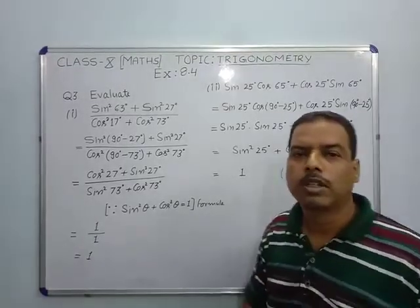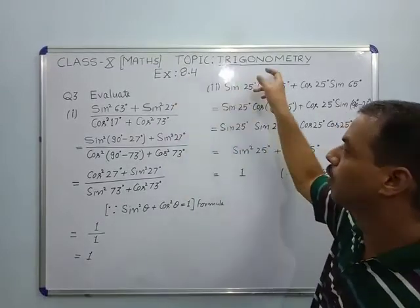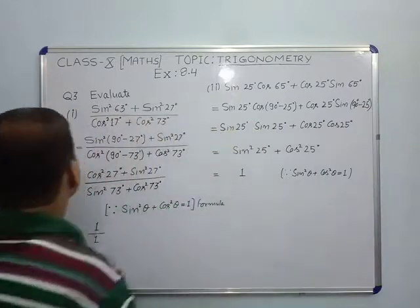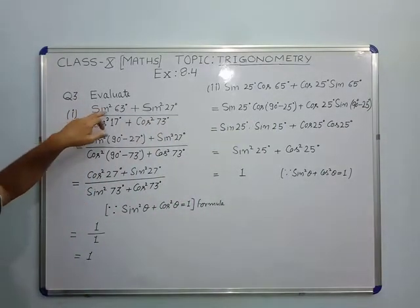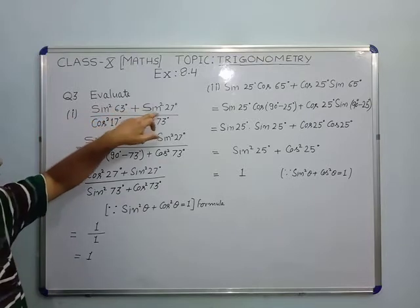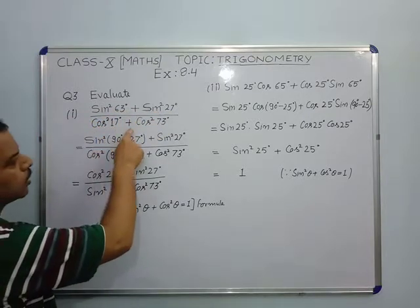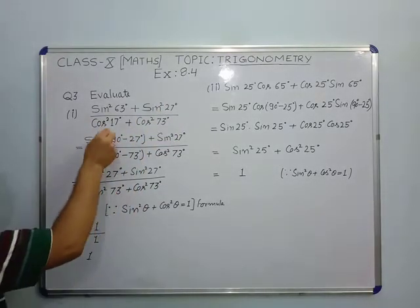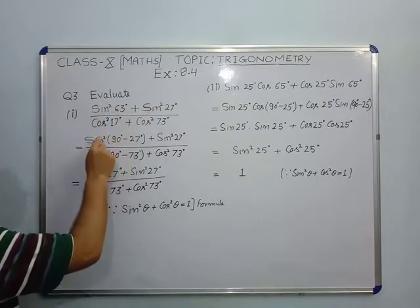Good morning, all of you. In the continuation of Exercise Number 8.4 from trigonometry, today we will discuss question number 3. Evaluate part 1: sin²63° + sin²27° divided by cos²17° + cos²73°. In this case, we will change only one of these two.